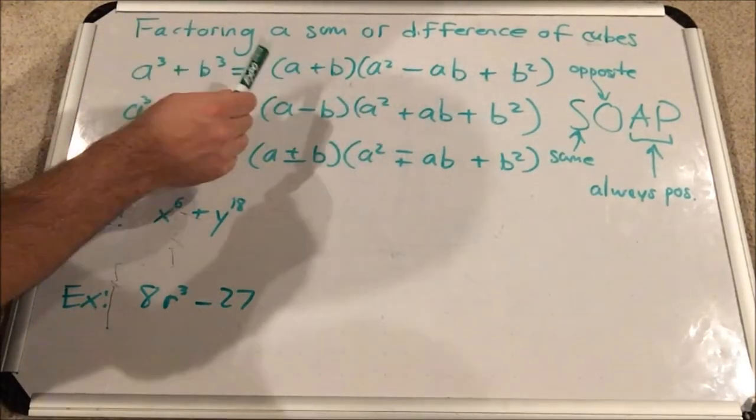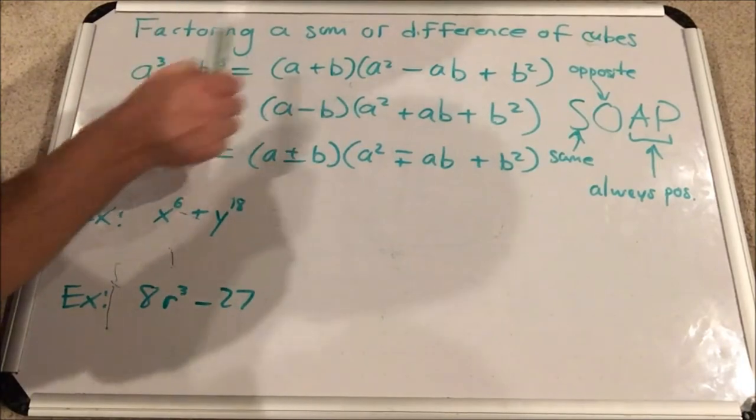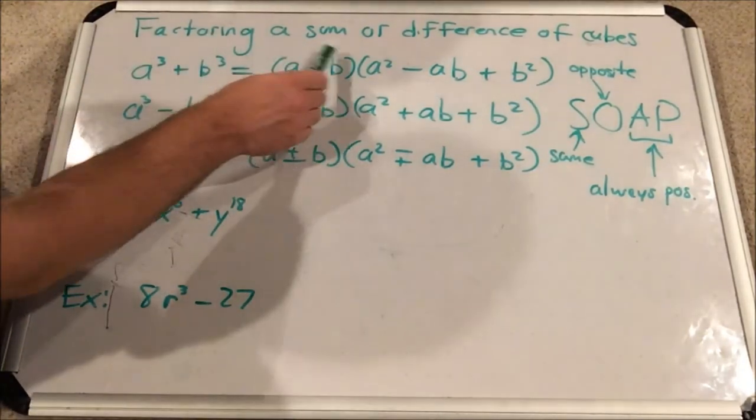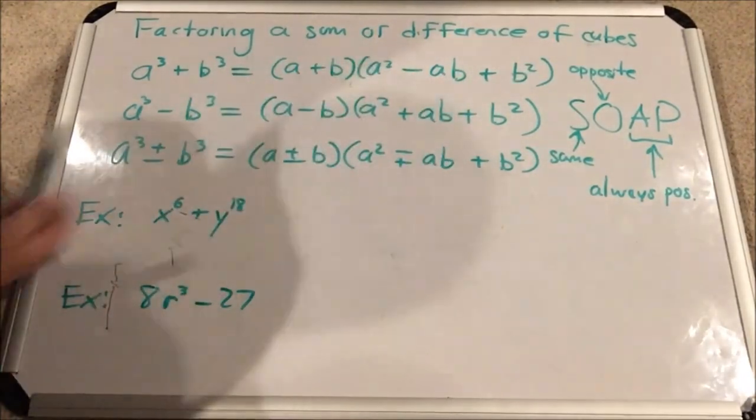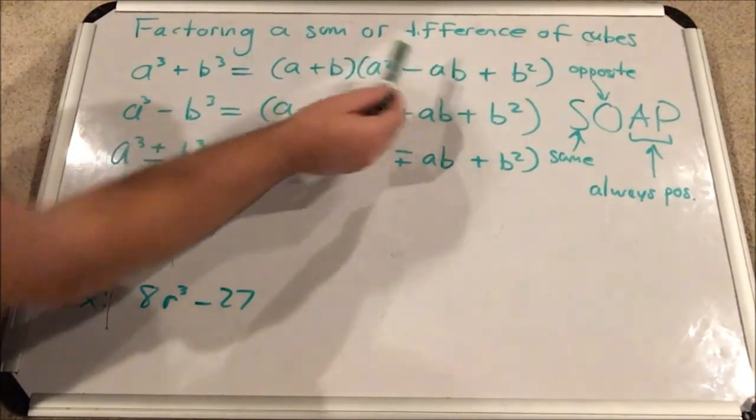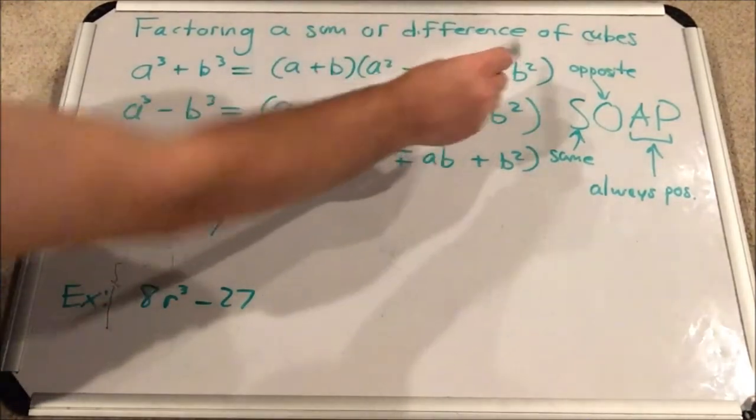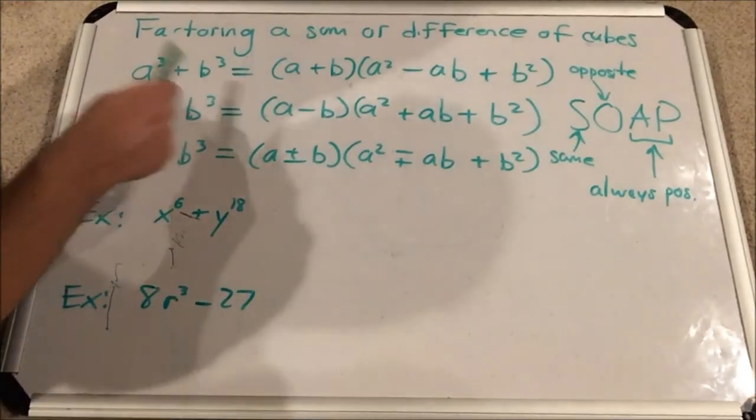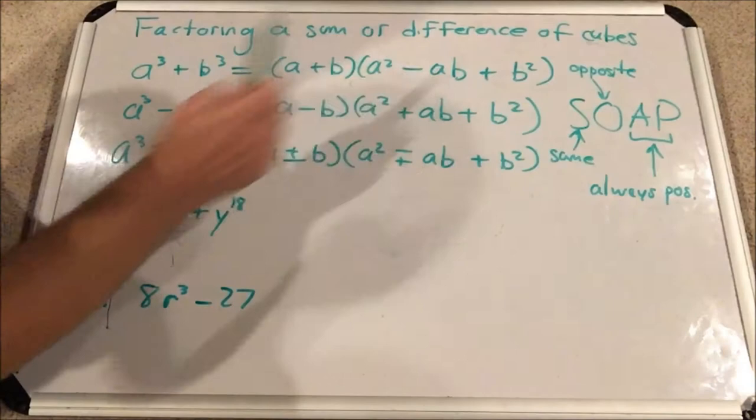Two parentheses. The first parentheses, we would write the cube root of the first term plus the cube root of the second term. See how there's no powers of three? Then we will multiply that by a trinomial, the first term's cube root squared minus the product of the cube root of the two terms, plus the square of the second term's cube root. Okay, notice how the middle sign changes.